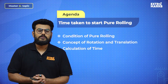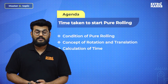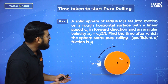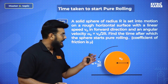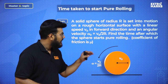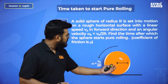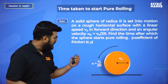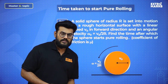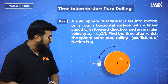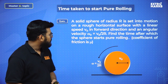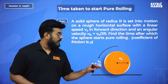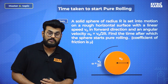Before moving to the conceptual part, let us first analyze the question for this session. A solid sphere of radius R is set into motion on a rough horizontal surface with a linear speed V₀ in the forward direction and an angular velocity ω₀ equal to V₀ by 2R. We need to calculate the time after which the sphere starts pure rolling, given coefficient of friction μ.